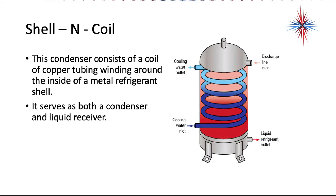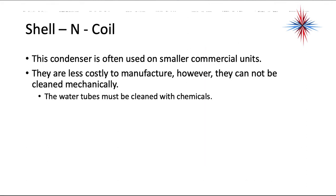The shell and coil condenser consists of a coil of copper tubing winding around the inside of a metal refrigerant cylinder, serving as both condenser and liquid receiver. It also uses a counter-flow arrangement — cold water enters where liquid refrigerant exits, and the water heats as it moves opposite to the refrigerant flow. Shell and coil condensers are used on smaller commercial units, are less costly to manufacture, but cannot be cleaned mechanically — water tubes must be cleaned with chemicals.